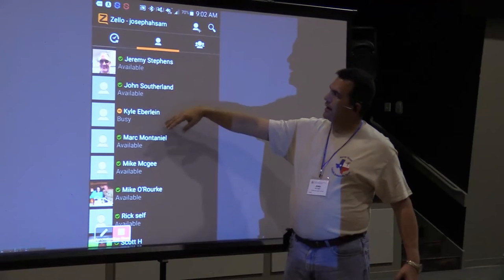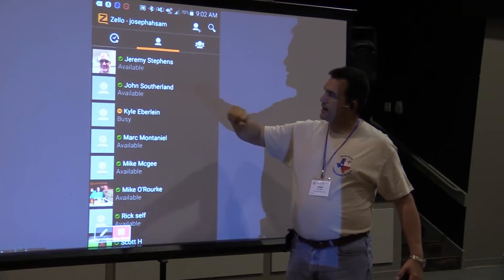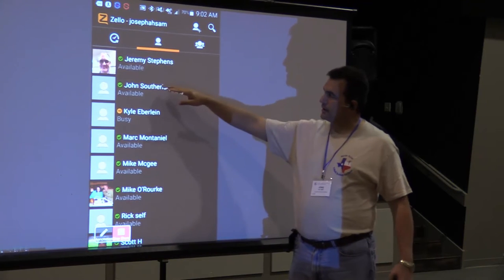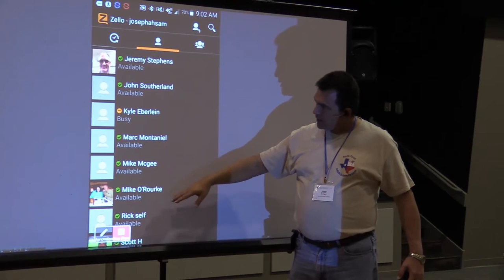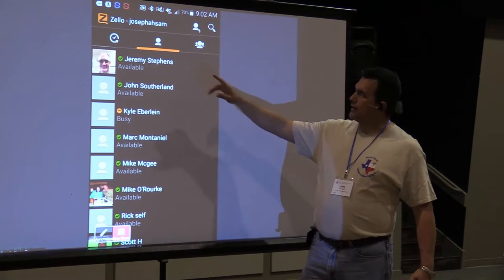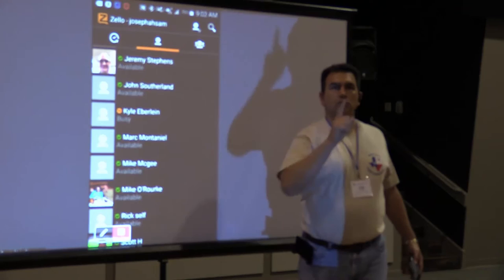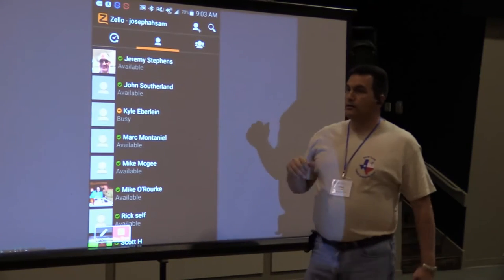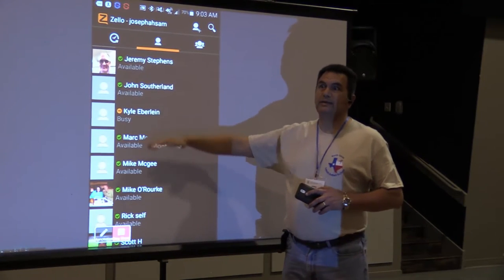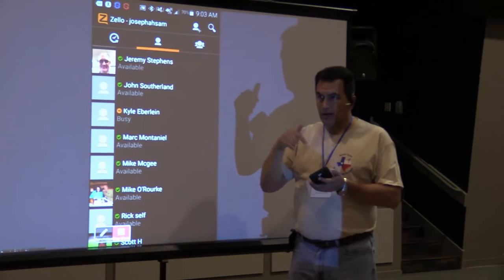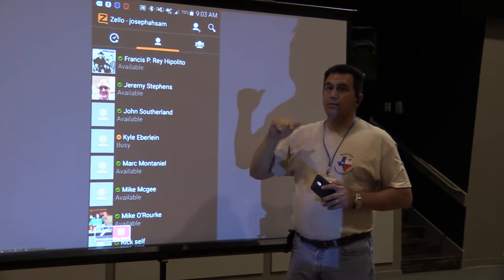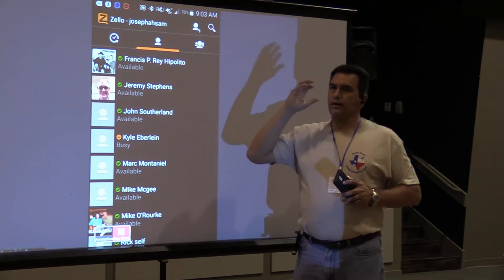Right now I can see that Jeremy's online, John's online. John is actually out of state, so if he was listening, I can talk to him right there. Kyle is busy right now. Mark, Mike, all these guys that are in green are actually online. When I hit that center button, it's a point-to-point, person-to-person call. If you want to talk to one of your buddies, you look for their name, add them to your profile, and you'll be able to talk to them directly if you don't want everybody to hear that conversation.